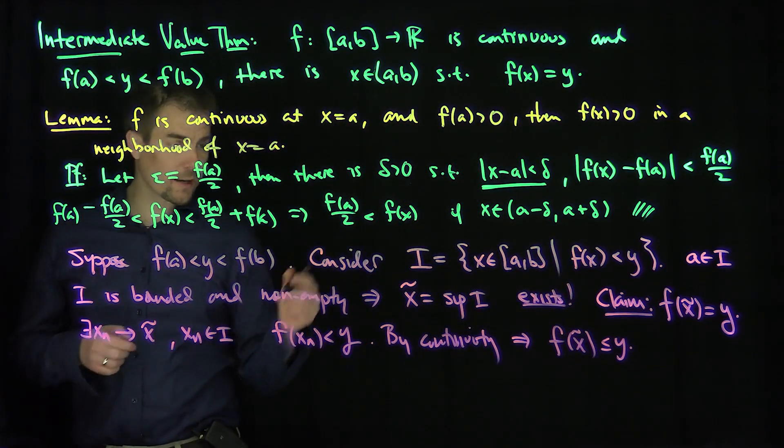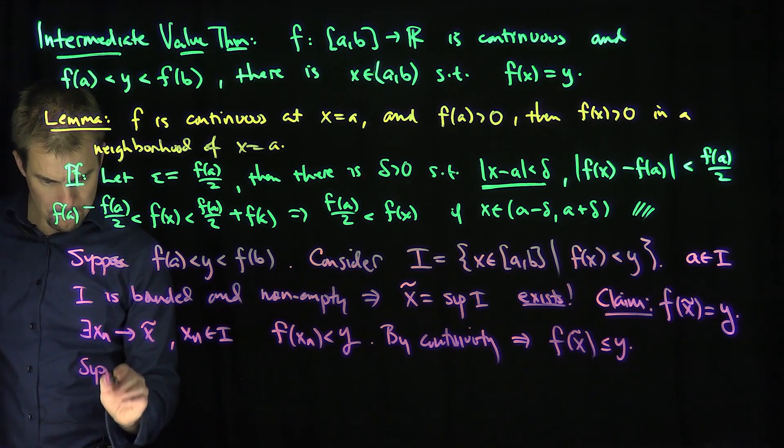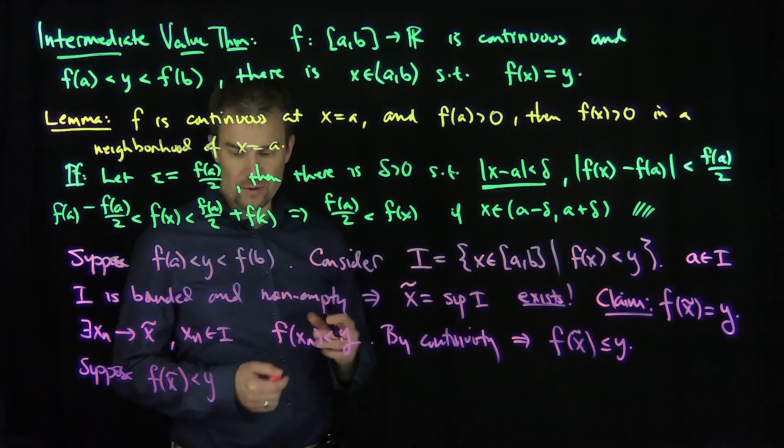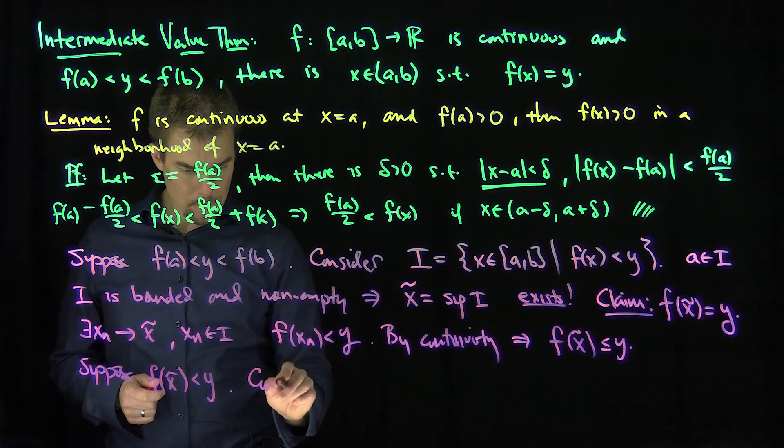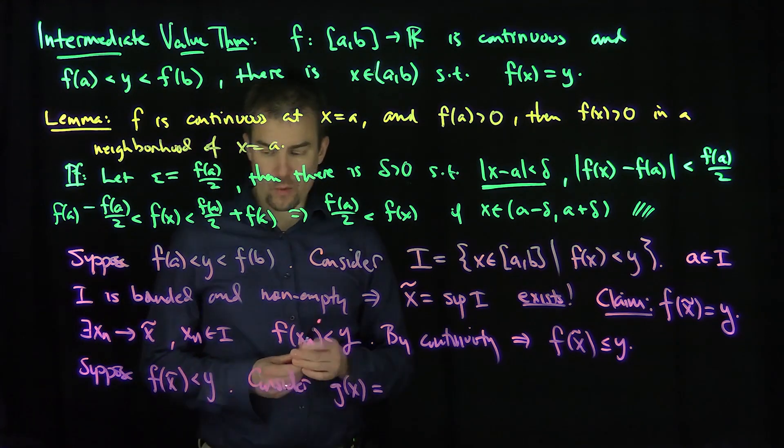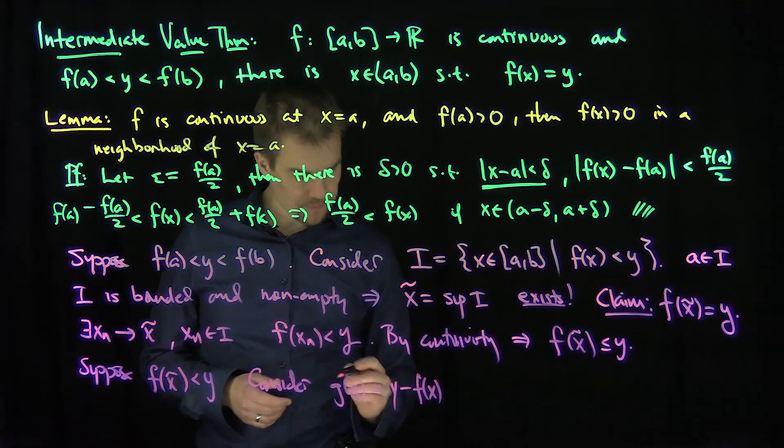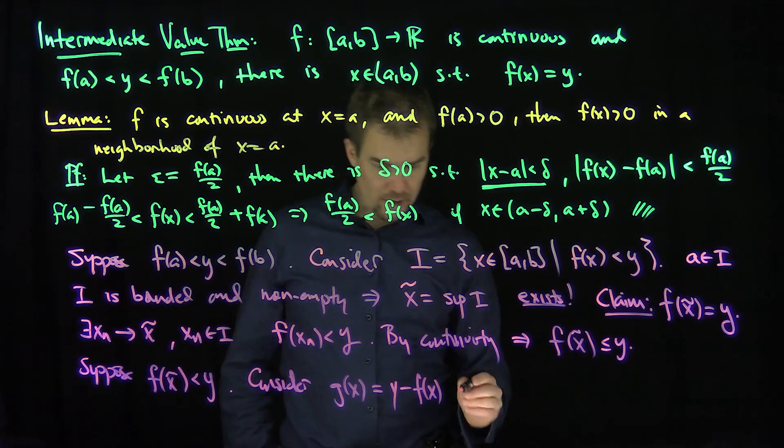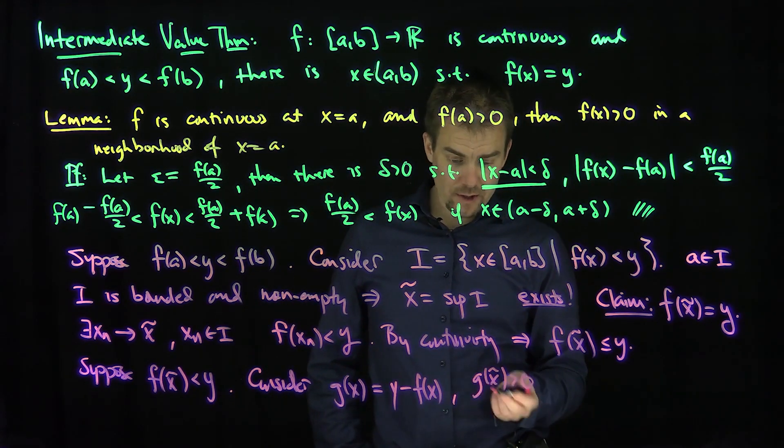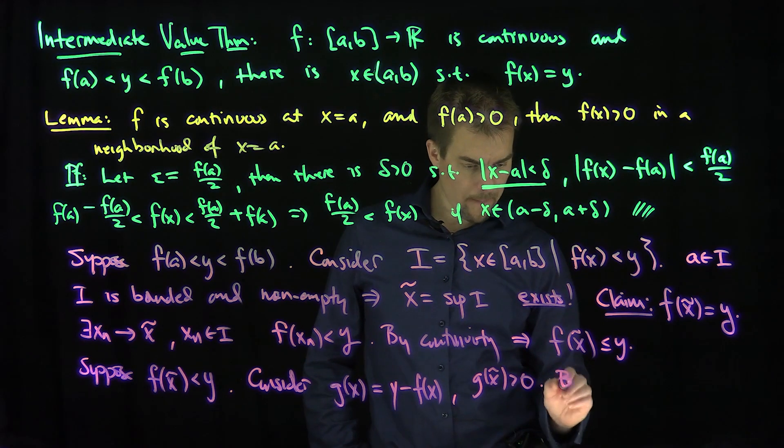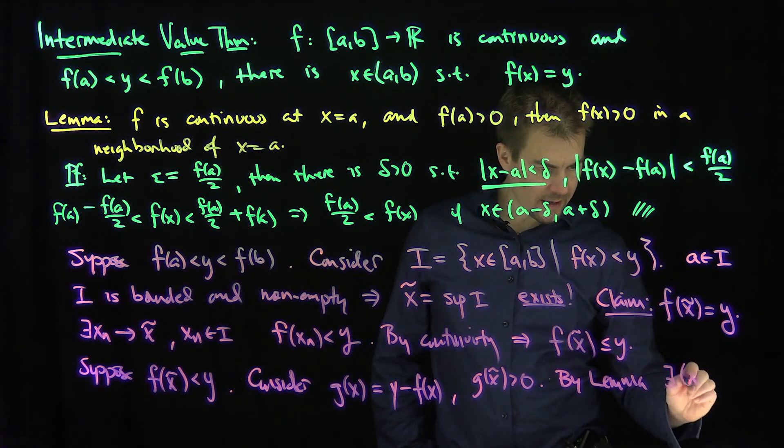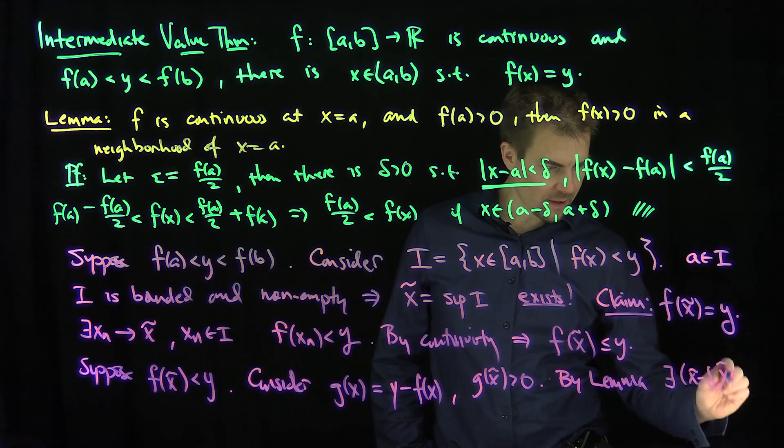To get the other direction, suppose by contradiction that f(x tilde) was strictly less than y. Consider the function g(x) which is y minus f(x). Then g(x tilde) is greater than zero. By the lemma, there exists an interval from x tilde minus delta to x tilde plus delta